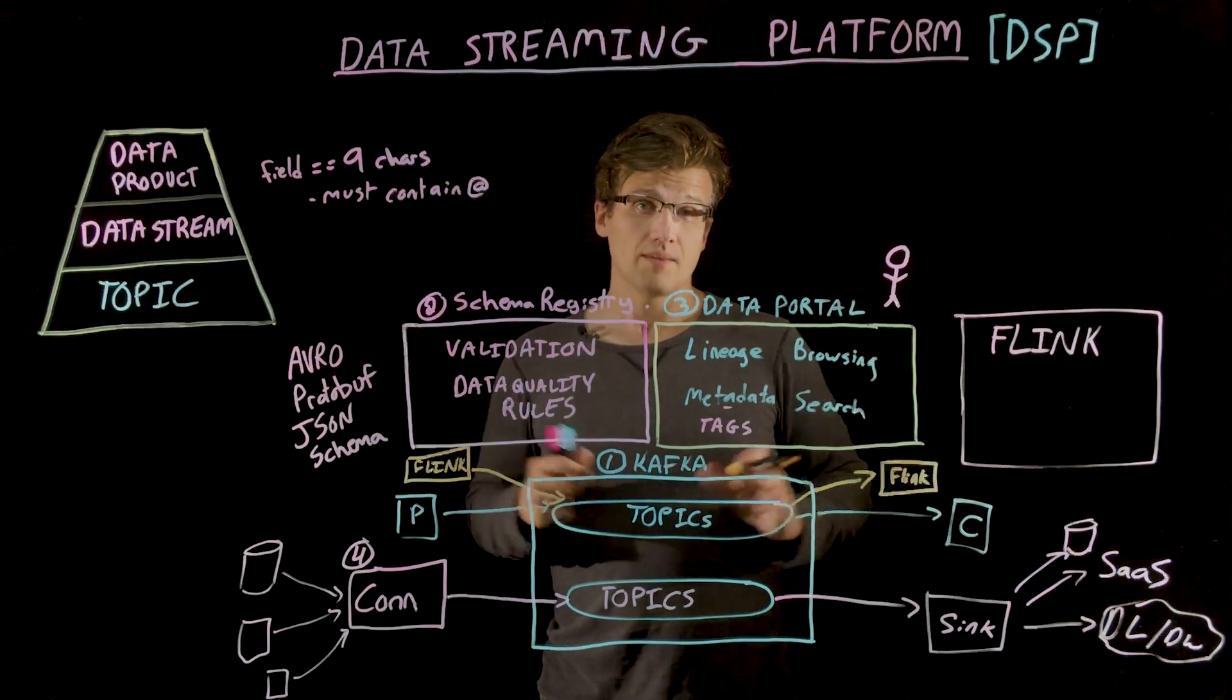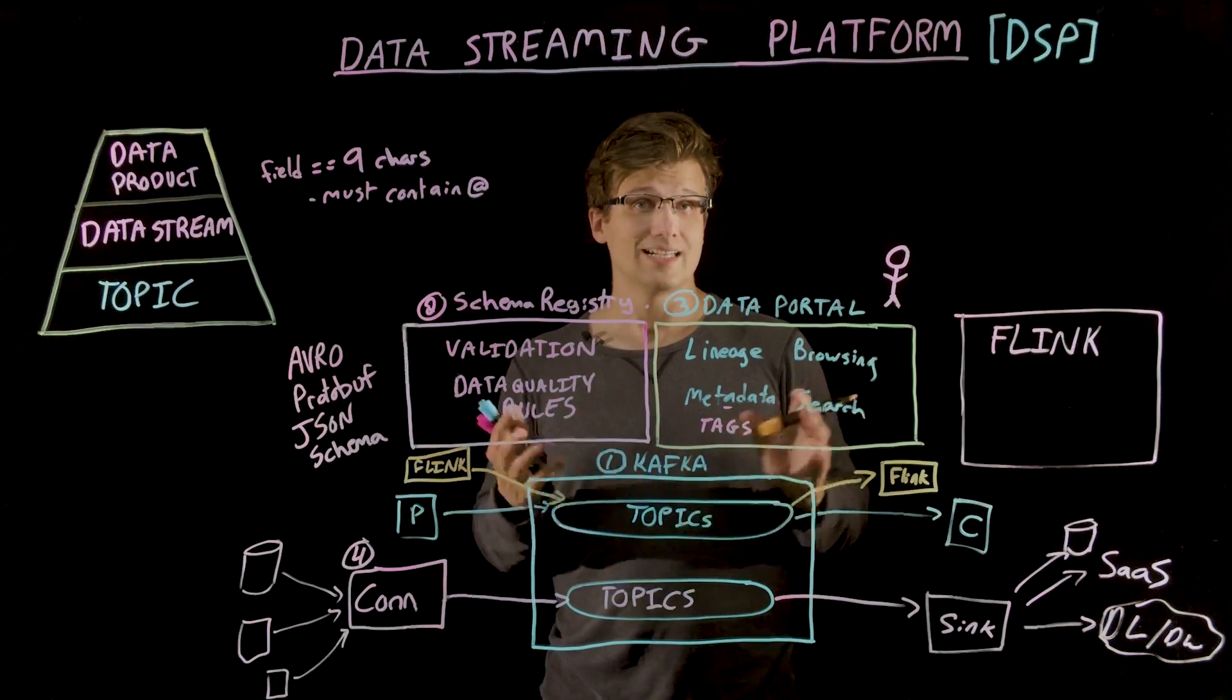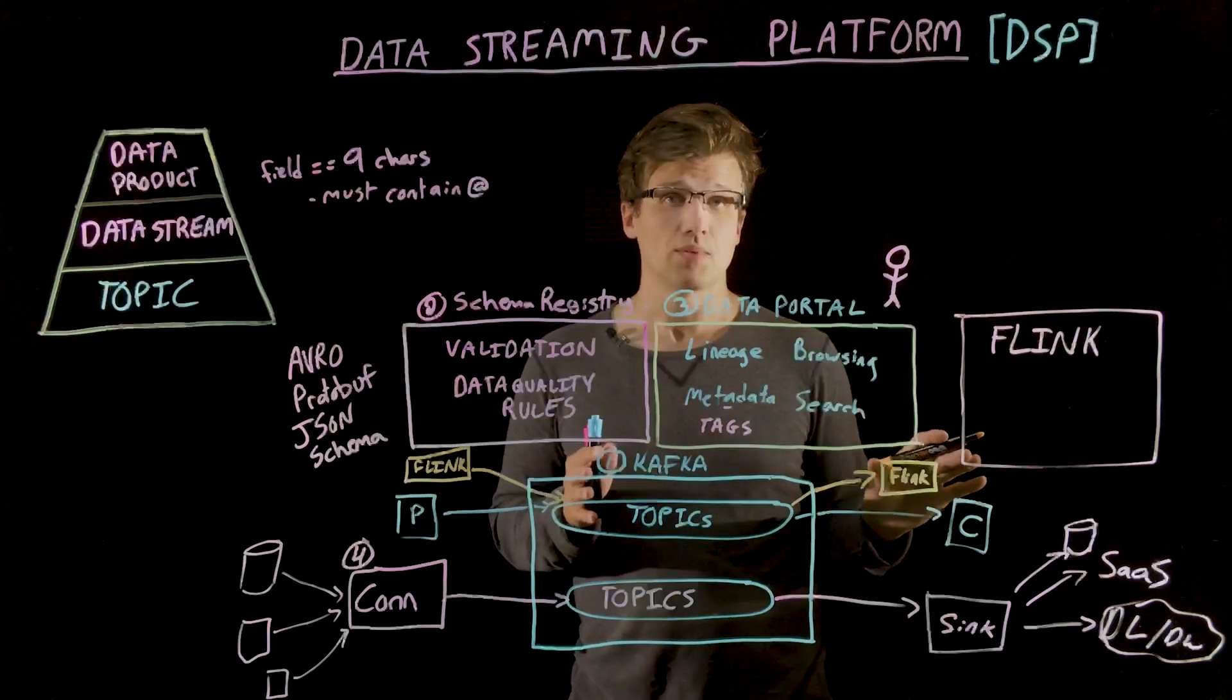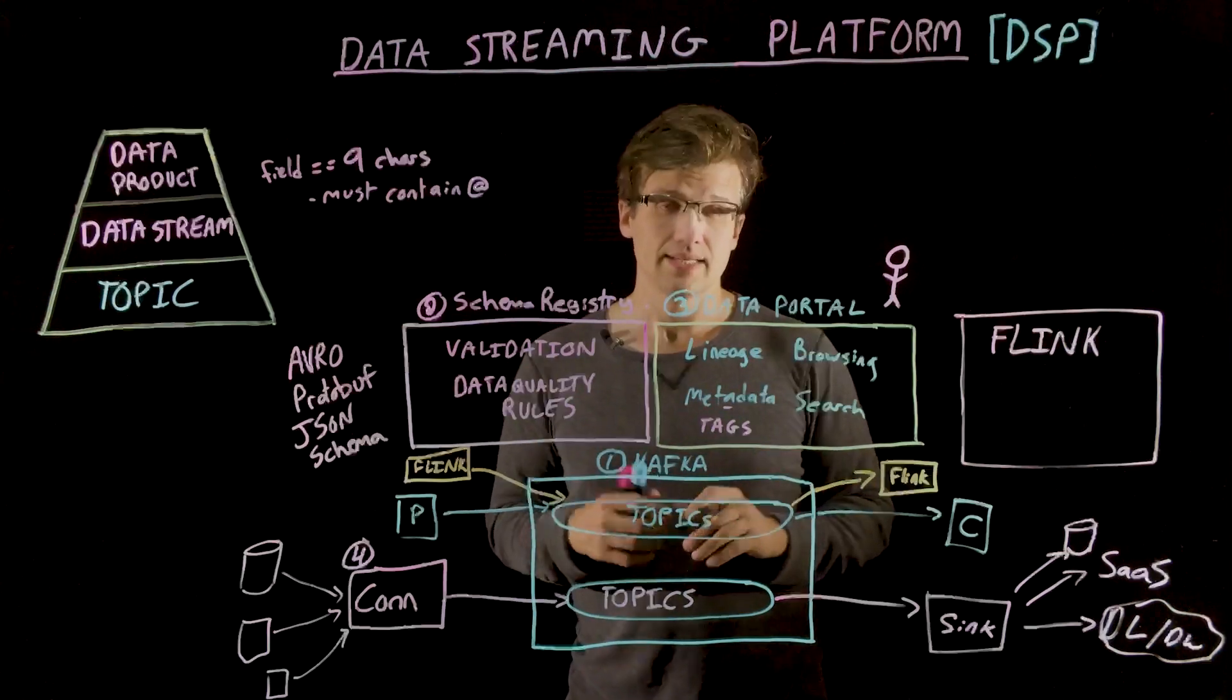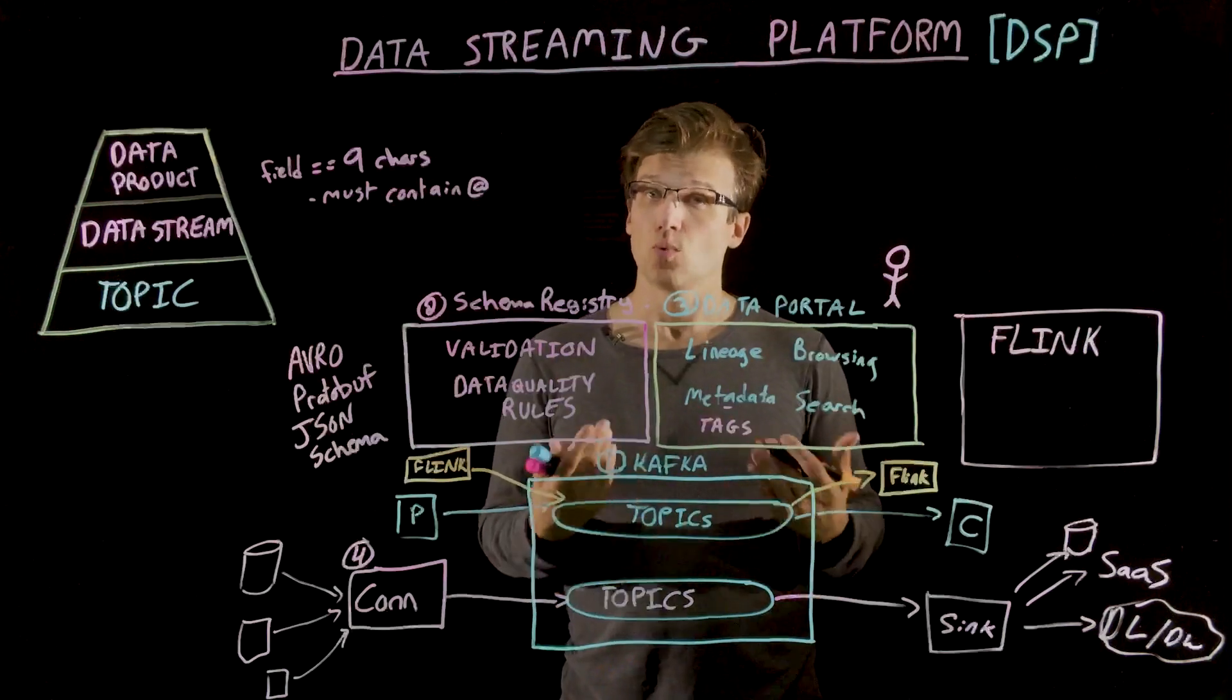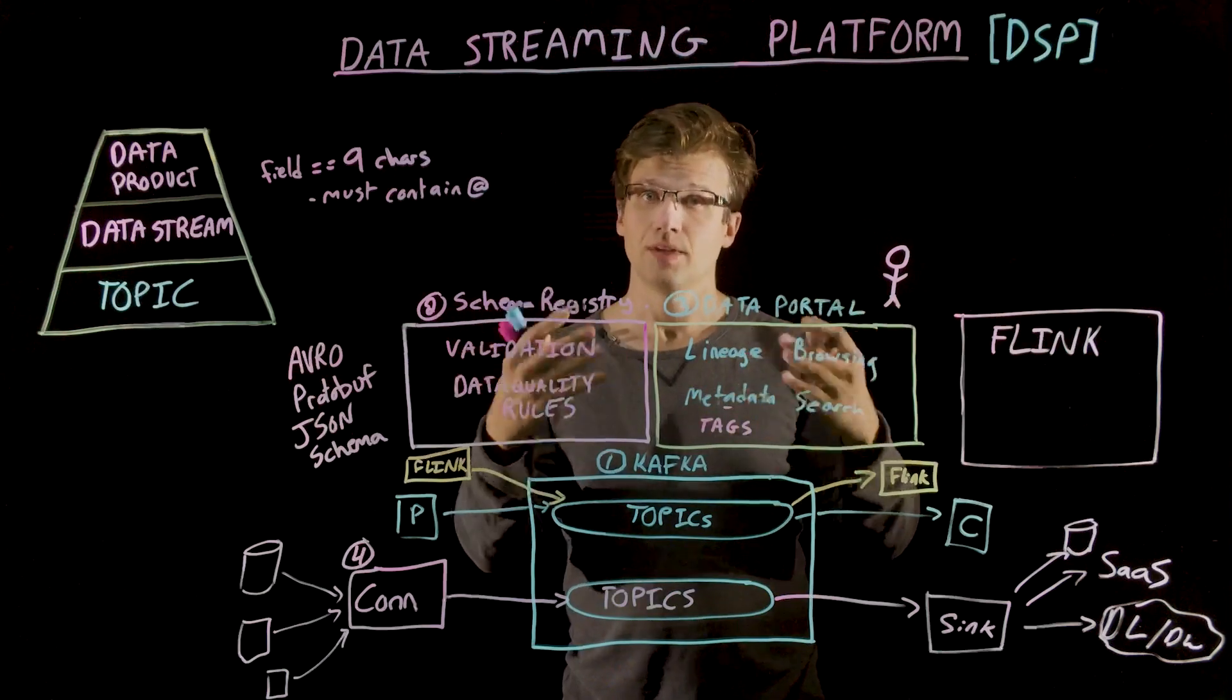You can choose other Kafka-compatible stream processors, of course, but for a well-functioning DSP, you're going to need to make sure that it can plug into your schema registry and respect the requirements of your data contract. Remember, the whole purpose of a DSP is to make it easy for you and your peers to use your event streams, which is what the governance of schema registry and data portal achieves.